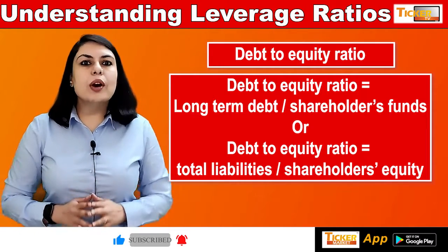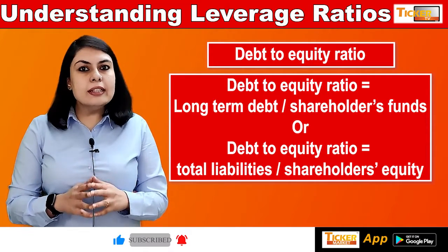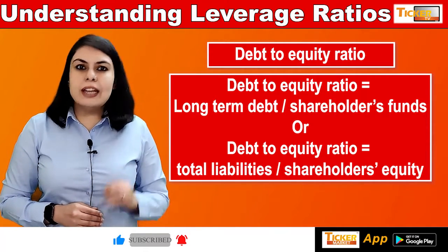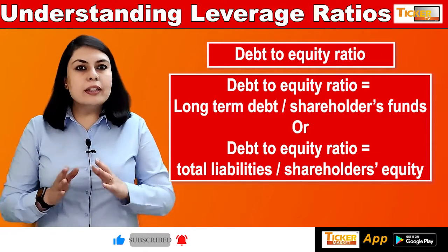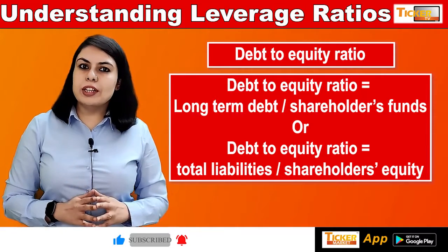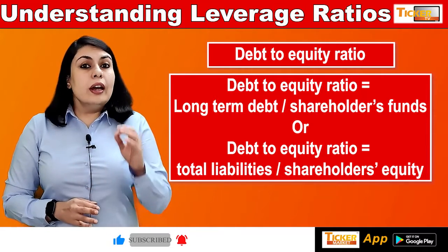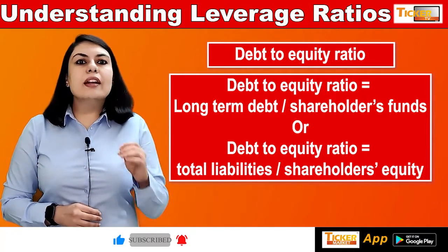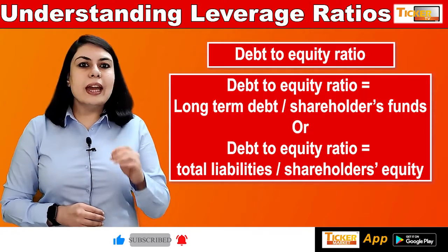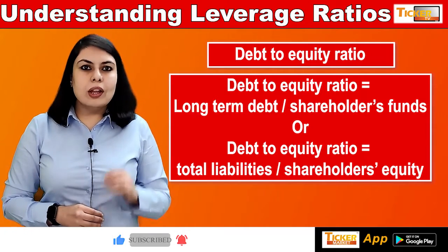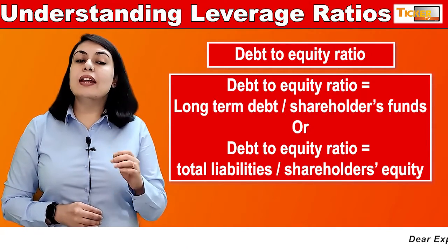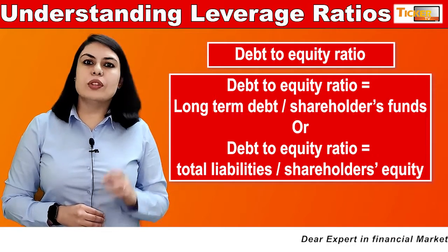A value of 1 in this ratio indicates an equal amount of debt and equity capital. If it is more than 1, it indicates higher leverage and one needs to be careful. Lower than 1 indicates a relatively bigger equity base with respect to the debt.